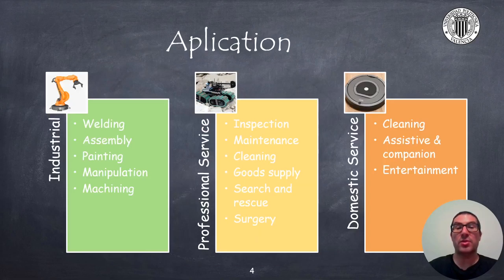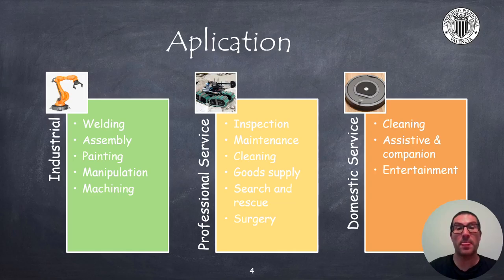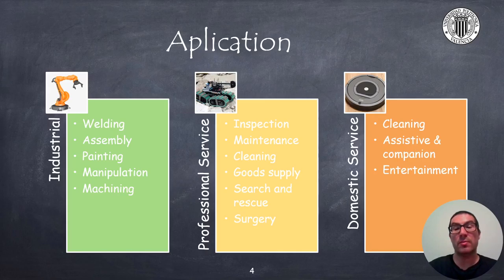There are multiple applications in robotics. Here I highlight three main areas. Robots used in industrial environments in applications such as welding, component assembling, painting, object manipulation, and machining, among others. On the other hand, there is a huge range of applications for non-industrial robots known as service robots, where we can distinguish between professional service robots and domestic service robots. In the professional field, we can find robots used in tasks such as inspection, maintenance, cleaning, and goods supplies, among others.